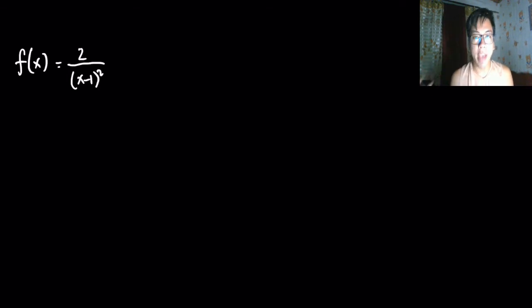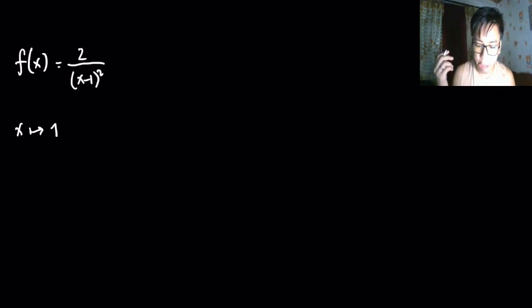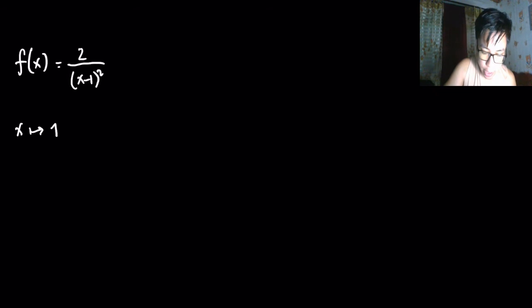Assuming you have a function f(x) = 2 over (x minus 1) squared. If we are going to investigate the behavior of some values of f as x gets close to 1, I already have made a computation for this earlier. So this is your x and this is your f(x). When x is 3, your f(x) is 0.5.